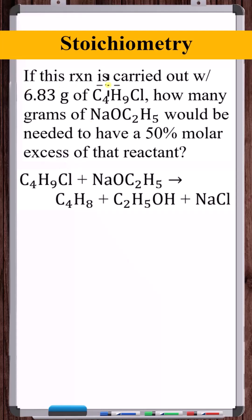If this reaction below is carried out with 6.83 grams of C4H9Cl, how many grams of NaOC2H5 would be needed to have a 50% molar excess of that reactant? To answer this, we want to figure out how many moles of NaOC2H5 would stoichiometrically react with 6.83 grams of C4H9Cl.